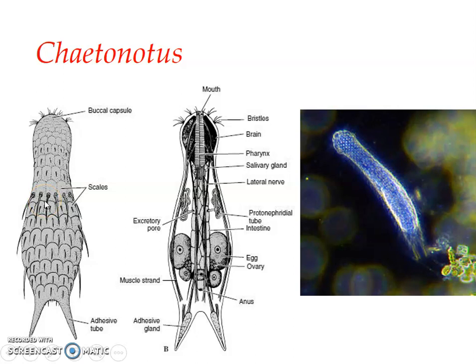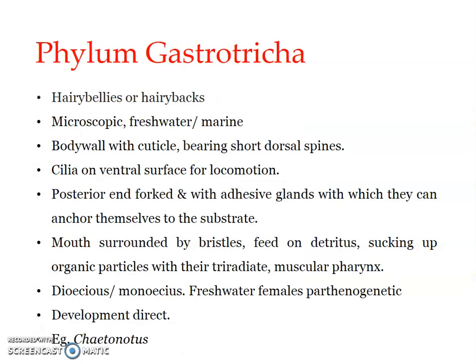Like other gastrotricans, Chaetonotus shows ciliary gliding and feeds on dead organic particles, live protozoa, and bacteria. Food is sucked into the mouth by the powerful pumping pharynx, which is long and muscular. Males are unknown in Chaetonotus, so reproduction is solely by parthenogenesis. The parthenogenetic females deposit eggs on aquatic weeds, which develop into females. This concludes the session on the phylum Gastrotricha.